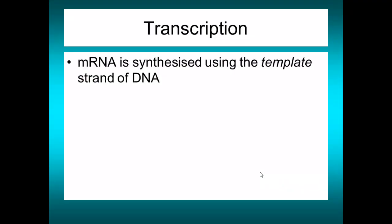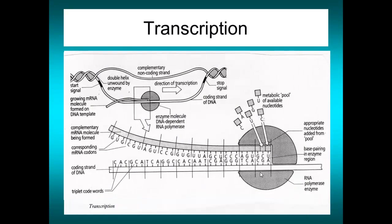In transcription, we use the template strand of DNA to synthesize mRNA. Looking at this diagram, the template strand is identified here. The mRNA being made is complementary to the template strand. The image uses older terminology labelling the other strand as the coding strand — an OCR-approved image will be shown shortly.